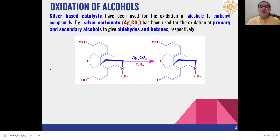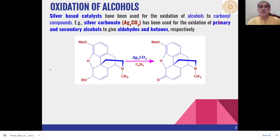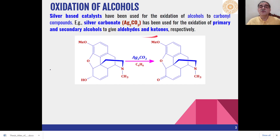First is oxidation of alcohols. Most of the silver-based catalysts oxidize alcohols to the corresponding carbonyl compounds. The most effective among these is silver carbonate, which has been used for oxidation of primary alcohols to aldehydes and secondary alcohols to ketones.